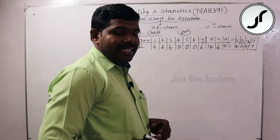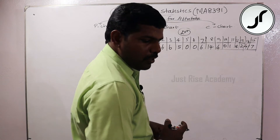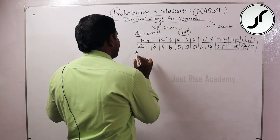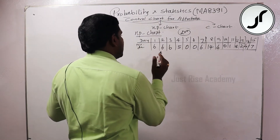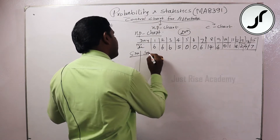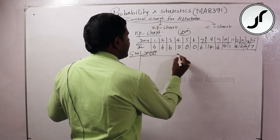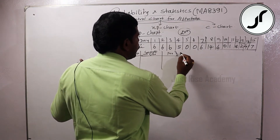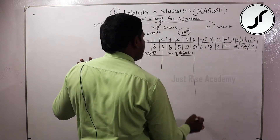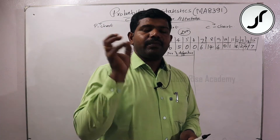So we want to make the NP chart. We need to make a tabular column for the direct NP chart. The columns are: sample number, sample size, and number of defectives. Proportion is not required for the NP chart — that is for the P chart.